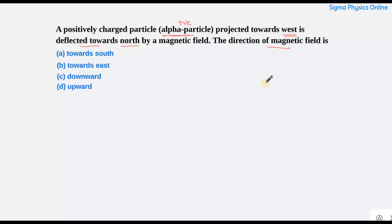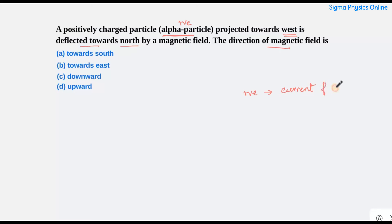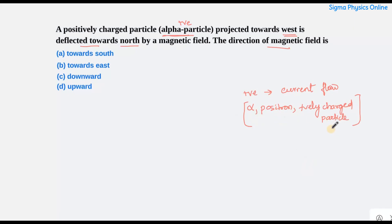To summarize the key point from this video: when solving questions involving Fleming's left hand rule, you must consider the direction of motion of a positively charged particle as the direction of current flow. If you are given any positively charged particle like an alpha particle, positron, or any other positive charge, point your middle finger in the direction those particles move.